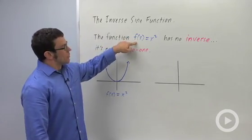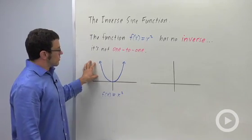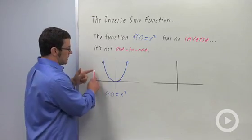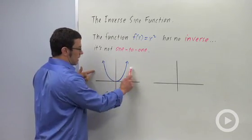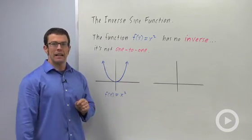f of x equals x squared has no inverse. Here's a graph of f of x equals x squared. It doesn't have an inverse because it's not one-to-one. And remember the test for one-to-one is the horizontal line test. If a horizontal line passes through more than one point on the graph of a function, it's not invertible.